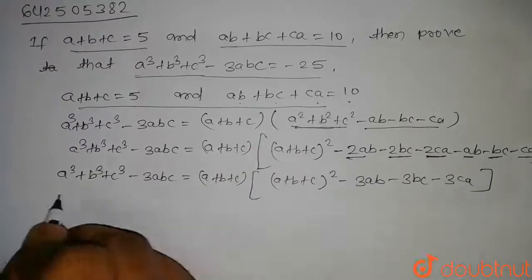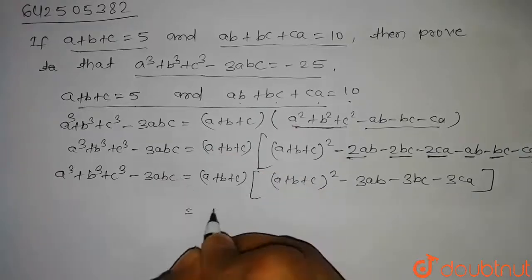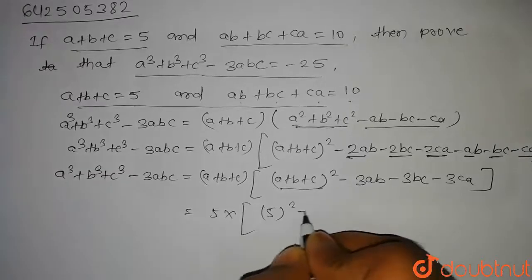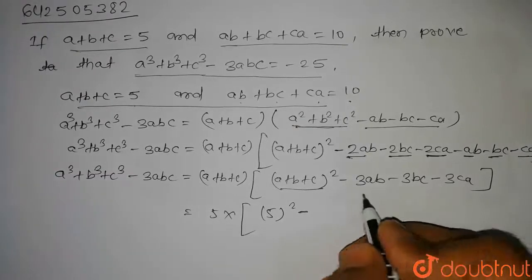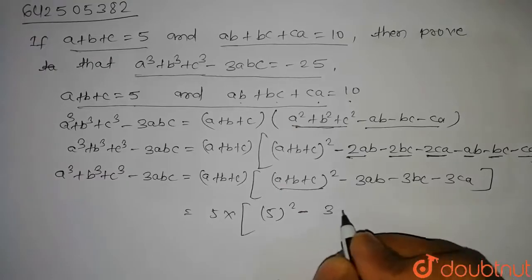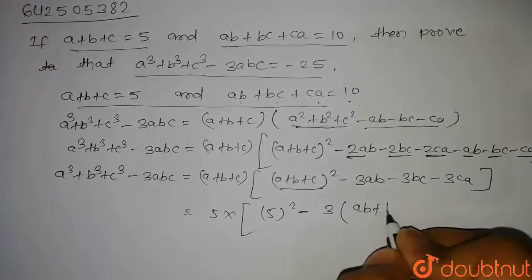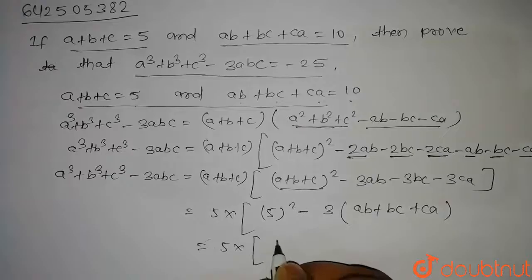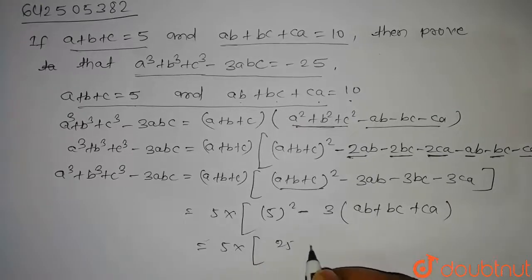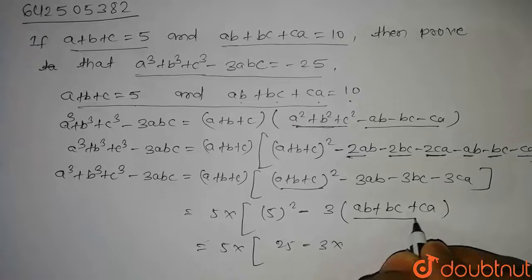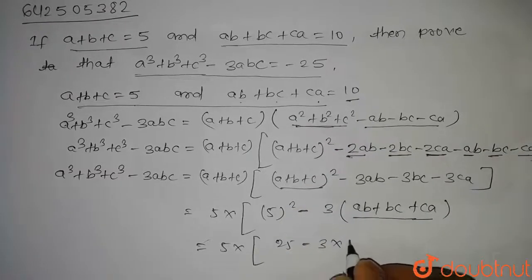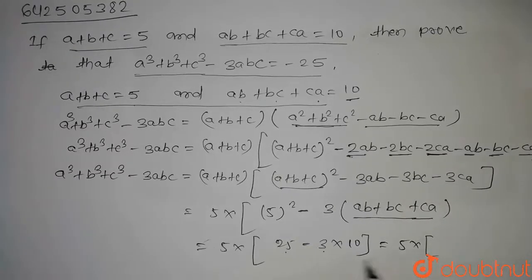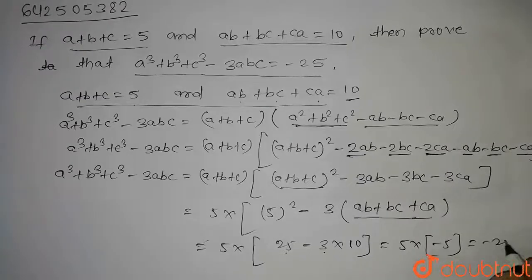Now putting in the given values — a plus b plus c equals 5 and ab plus bc plus ca equals 10 — we get 5 into [5² minus 3 into 10], which is 5 into [25 minus 30], giving 5 into (minus 5), which equals minus 25.